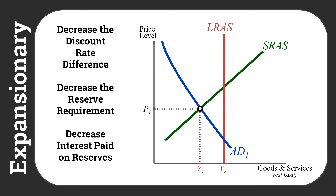We could also conduct expansionary monetary policy and move the aggregate demand curve out with our other three key tools that the Federal Reserve can use: decrease the difference between the discount rate and the federal funds rate, decrease the reserve requirements, or decrease the interest paid on reserves.